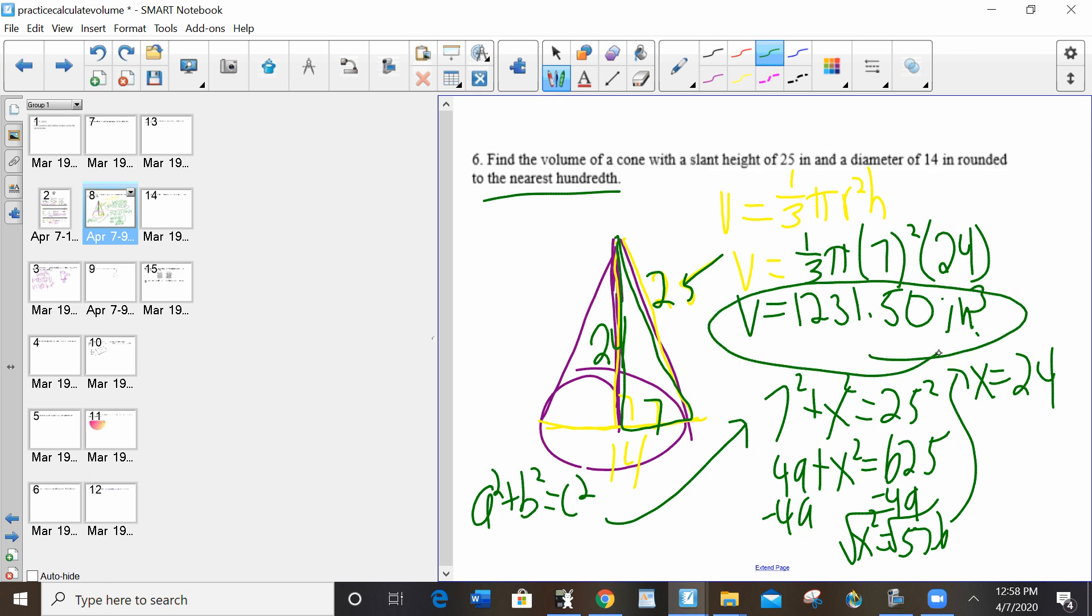So again, if they give you slant height, that's a bit of a pain. You're going to have to do Pythagorean theorem to get the actual height and use that value.